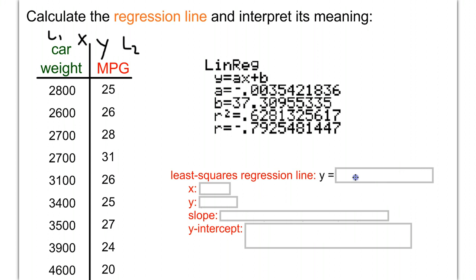Here we have a number for a: negative 0.00354.